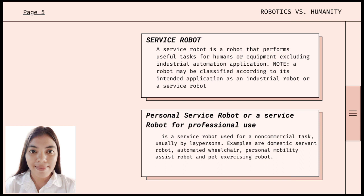Service robots are classified into two categories based on their use in human life. First, the personal service robot: it is a service robot used for a non-commercial task, usually by laypersons. These robots are mainly used for self-assistance and for performing non-commercial tasks only. Examples include the Domestic Servant Robot, Automated Wheelchair, Personal Mobility Assist Robot, and Pet Exercising Robot.